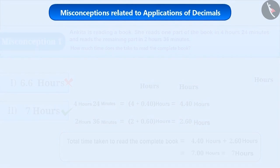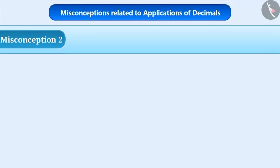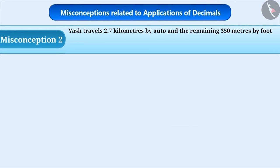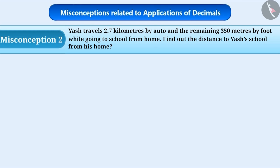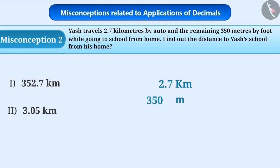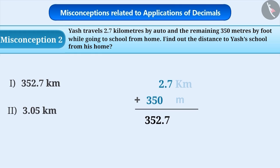Misconception 2: Yash travels 2.7 kilometers by auto and the remaining 350 meters by foot while going to school from his house. Can you find out the distance he has to travel from his home to school? While performing mathematical operations with numbers having different units, sometimes students make a common mistake — they simply ignore the units and perform the operation on the numbers. The sum of 2.7 and 350 is found as 352.7 kilometers, which is incorrect.